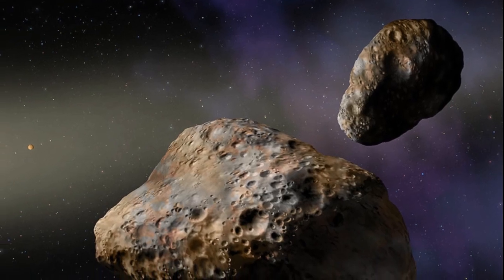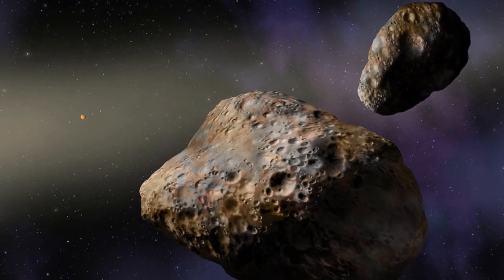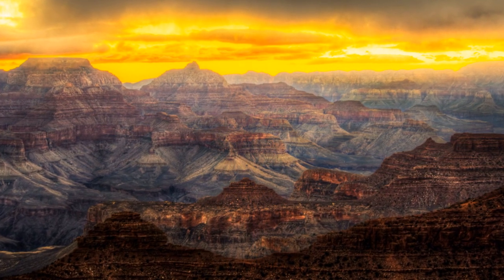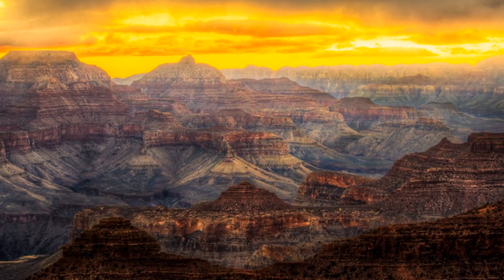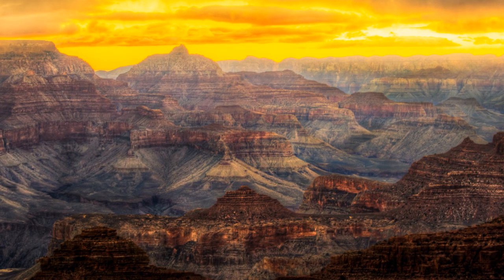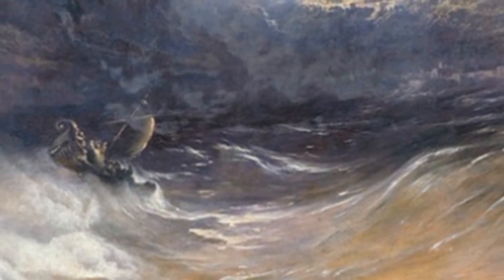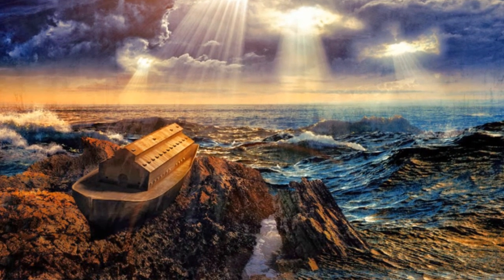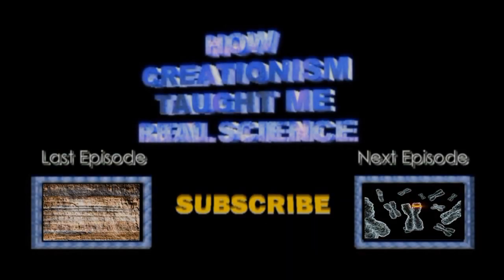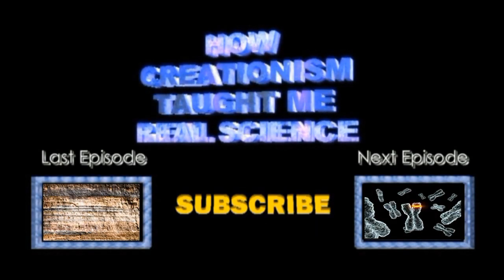This age also holds true when used on bodies from space, such as asteroids. So perhaps uniformitarianism is wrong, but like all good theories, it makes predictions. And thus far, all evidence confirms those predictions. That is why it is accepted, and flood geology still has no predictive power. So just by testing flood geology and its predictions, you can see another example of how creationism taught me real science.